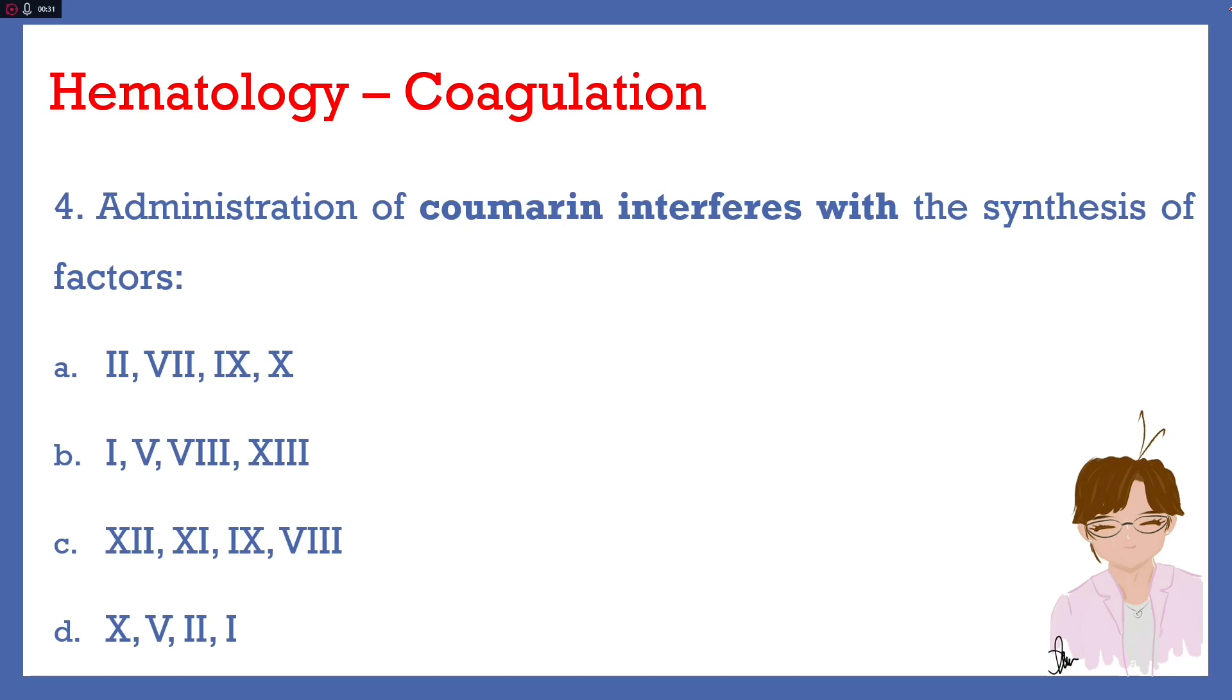Number 4. Administration of coumarin interferes with the synthesis of factors: A, 2, 7, 9, 10. B, 1, 5, 8, 13. C, 12, 11, 9, 8. Or D, 10, 5, 2, 1. Answer here is letter A, because coumarin is an oral anticoagulant. There are two types of anticoagulant therapies being given to our patients. First, we have oral anticoagulants, and we also have intravenous anticoagulants.